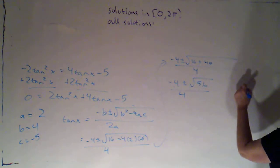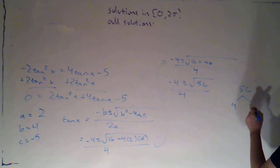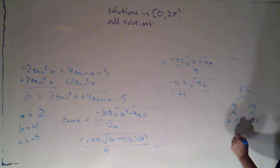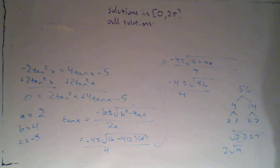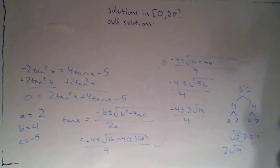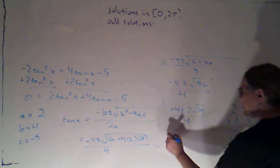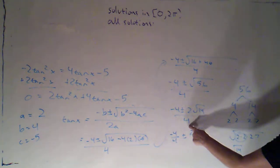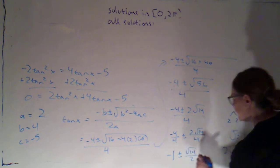I can simplify that square root. Since 4 goes into both 16 and 40, it goes into 56 giving 14 times. So √56 = √(4 × 14) = 2√14. That gives (−4 ± 2√14) / 4. Distributing the division, each term divides by 4, and I can cancel to get −1 ± √14/2.